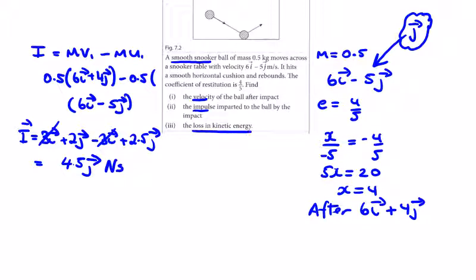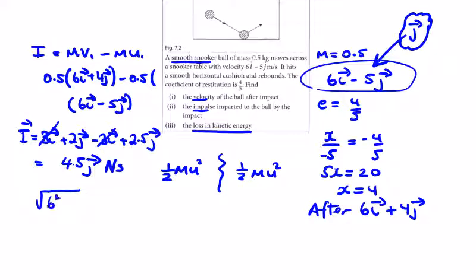We need the magnitudes of the velocities. Before, we have the square root of 6 squared plus 5 squared - that's 36 and 25, which is root 61.